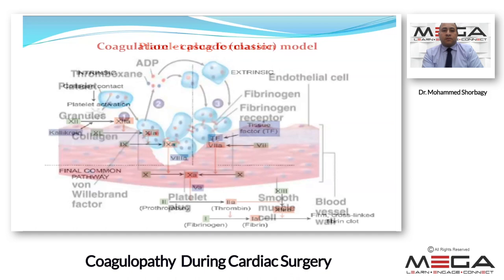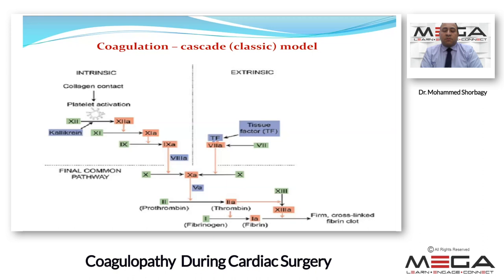This is the classic model of the coagulation cascade — intrinsic, extrinsic, and final common pathway at factor X, then prothrombin to thrombin, fibrinogen to fibrin, to form firm cross-linked fibrin clots.